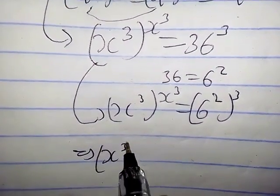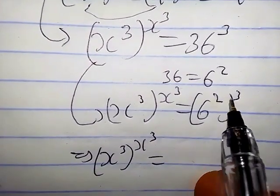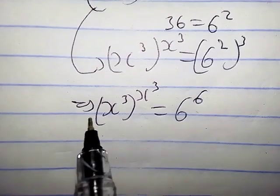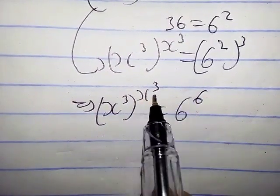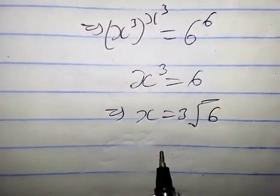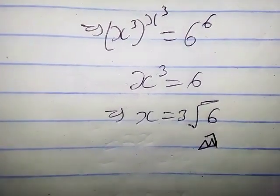You observe that this is similar to this. We can now claim that s cube is indeed equal to 6. So this gives x equals to cube root of 6, which is the required solution.